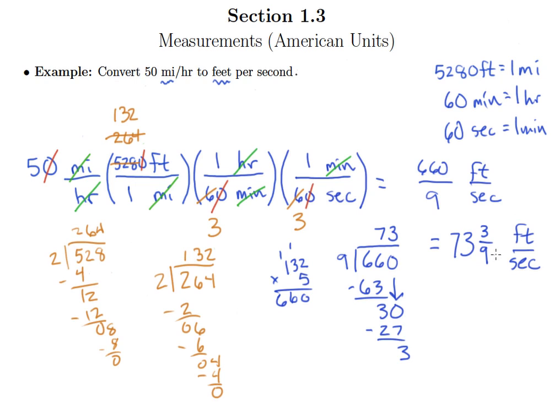And then the only other thing we need to do here is understand, okay, 3 ninths is not completely reduced. And so we'll just divide top and bottom by 3. And we'll end up with 73 and 1 third feet per second.